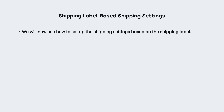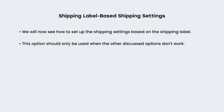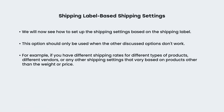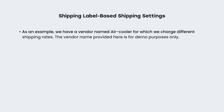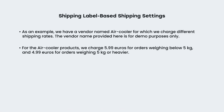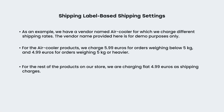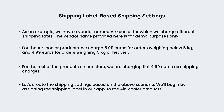Shipping label based shipping settings. We will now see how to set up the shipping settings based on the shipping label. This option should only be used when the other discussed options don't work — for example, if you have different shipping rates for different types of products, different vendors, or any other shipping settings that vary based on products other than the weight or price. In the shipping label based shipping settings, you need to assign a specific shipping label to a particular product or group of products and use them to create different shipping rates. As an example, we have a vendor named air cooler for which we charge different shipping rates — $5.99 euros for orders weighing below 5 kilograms and $4.99 euros for orders weighing 5 kilograms or heavier. For the rest of the products, we are charging a flat $4.99 euros as shipping charges. Let's create the shipping settings based on the above scenario.